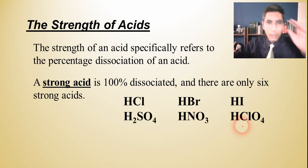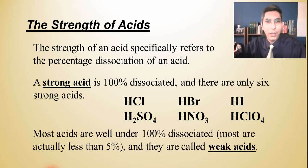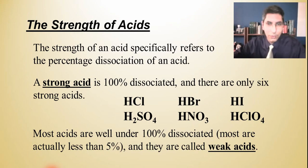You need to know those six, and just by looking at an acid formula you should be able to tell if it's strong or weak. If you see one of those six, it's strong; if it's an acid and not one of those six, it's weak. Most acids are well under 100% dissociated — in fact, most are way under even five percent. Those are called weak acids.